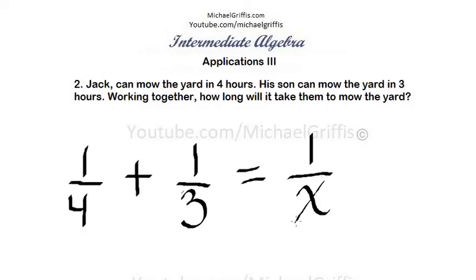Now in the previous problem, we would multiply all the way across by four times three times x. And you can think of it that way. You know what, let's just do it that way.